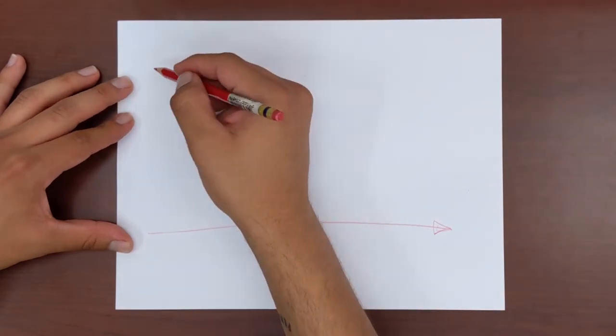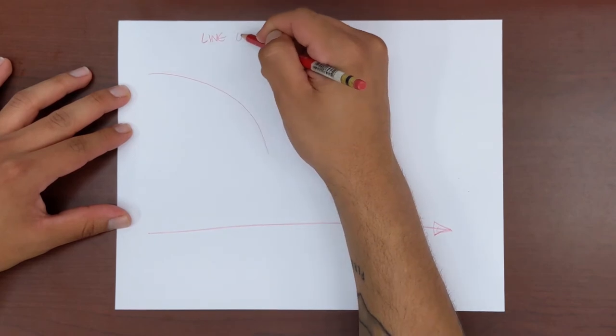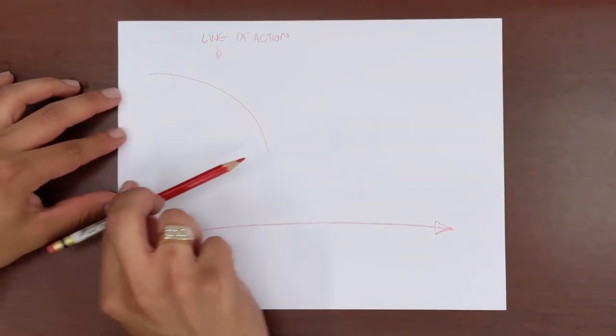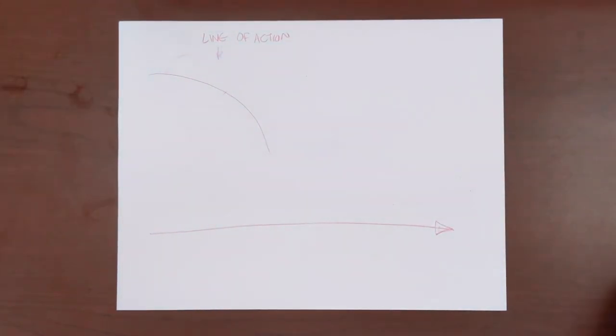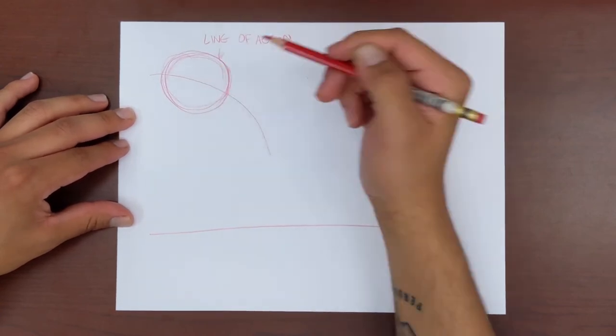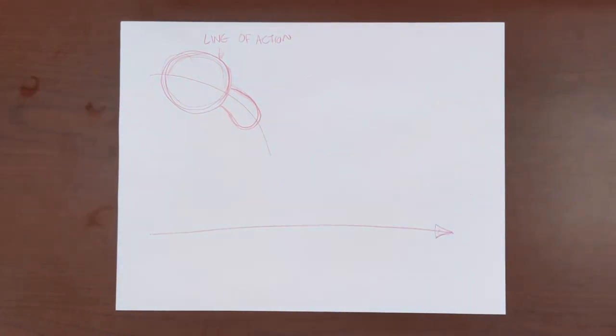For our next running motion, we want to draw a line of action a little more active. Let's say our character is running away from something that's chasing them. Our line of action might look something like this. It is curved and bending like this to illustrate that our character is moving so fast, the air or wind in our drawing is blowing them back and bending them backwards. Next, we can place our character's head again at the halfway mark on our line of action.